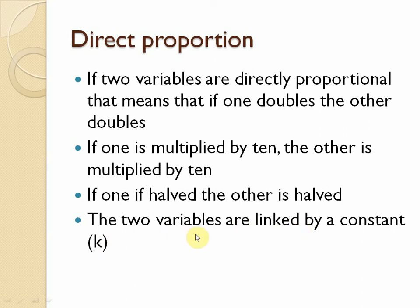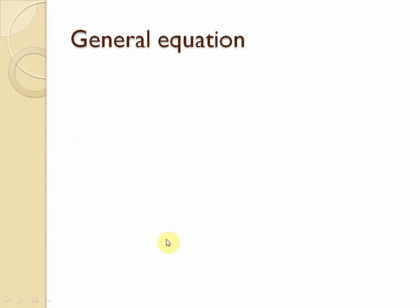Variables are quantities that vary — for example x and y, or a, b, c, d, whatever variables are used in the question. Every variable is connected with a constant. This is called the constant of proportionality.